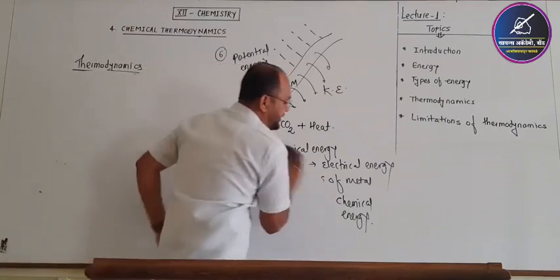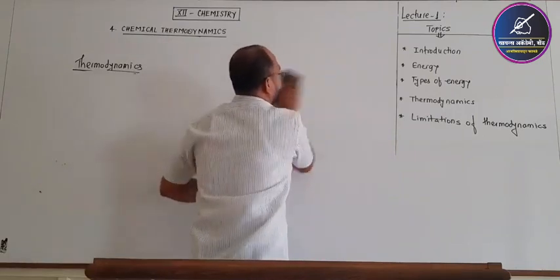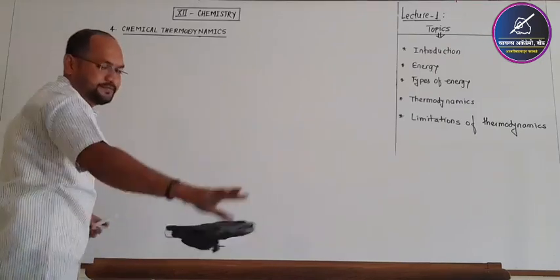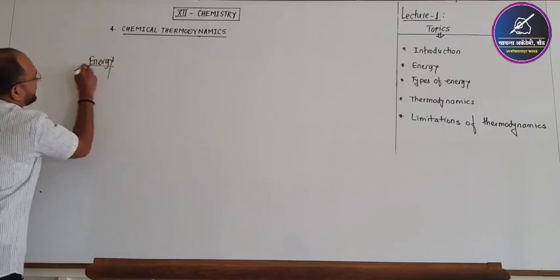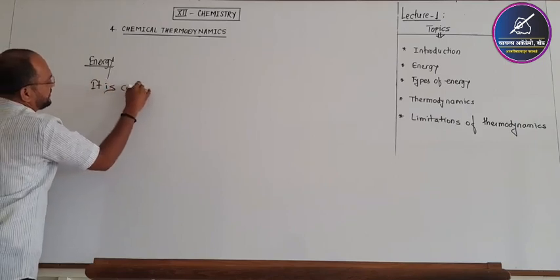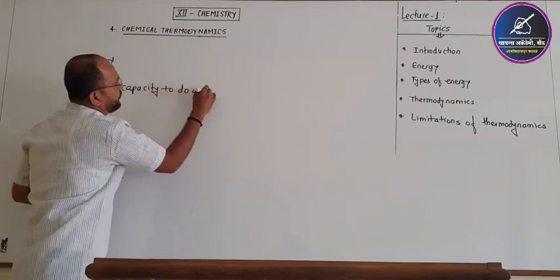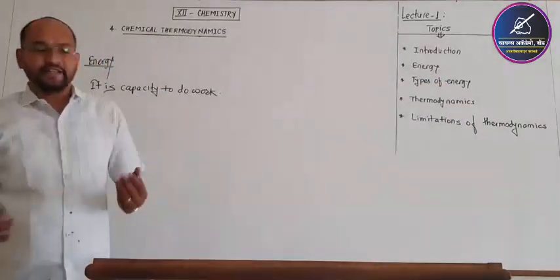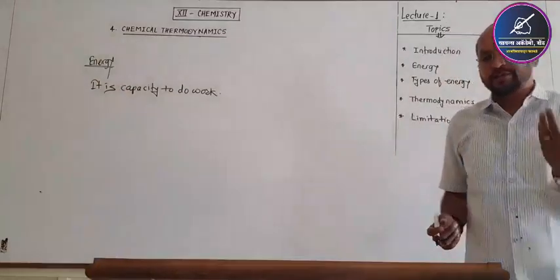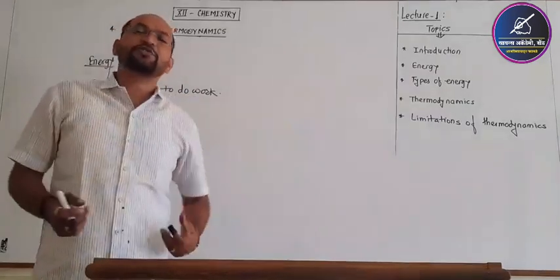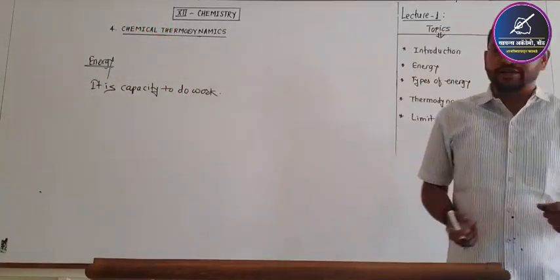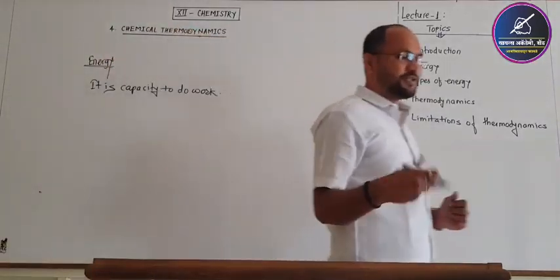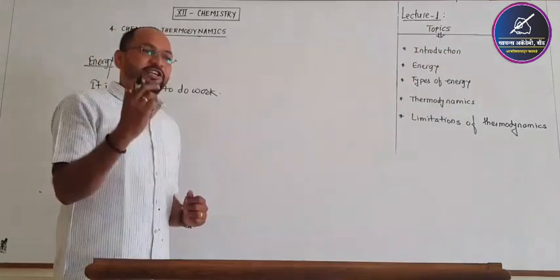Now we are going to discuss what is energy. Energy is the capacity to do work. If you want to perform certain work, we require energy. For example, when we take food into our body, through the process of digestion that food gets broken down and converted into energy, that is ATP. This energy is used to perform different functions and processes of our body. It means that here again, energy is in motion.